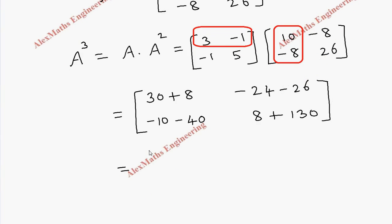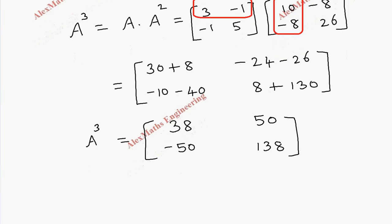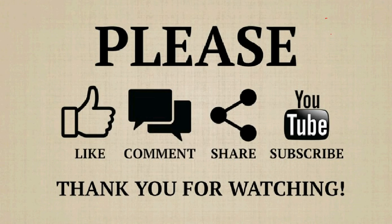So totally, this is 38, and this is 50. This is minus 50, and the last element is 138. So this is the matrix A cube, and this will have the eigenvalues alpha cube and beta cube. Thank you.